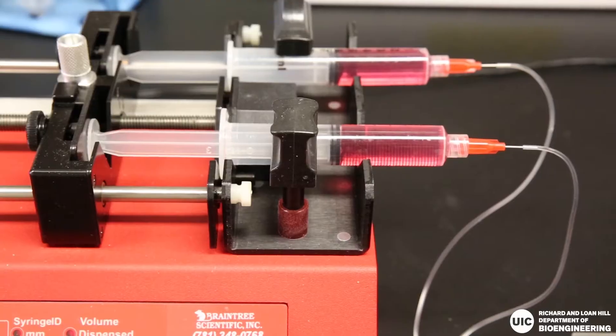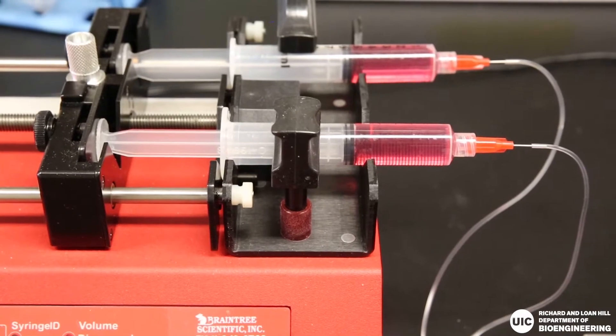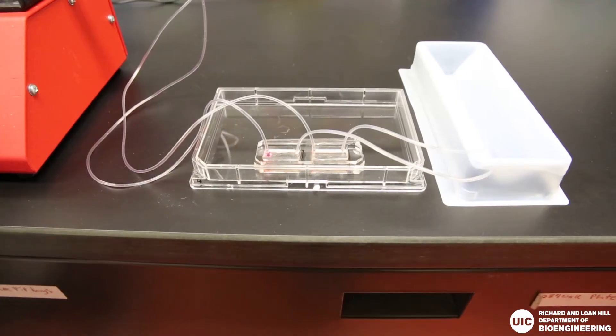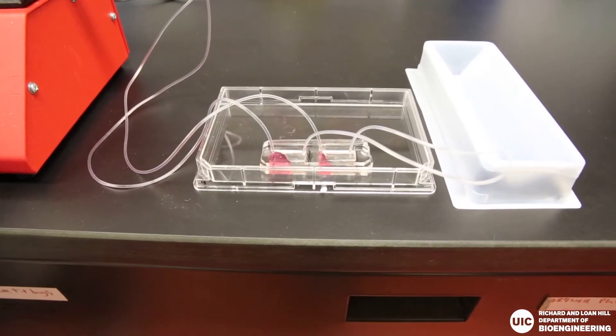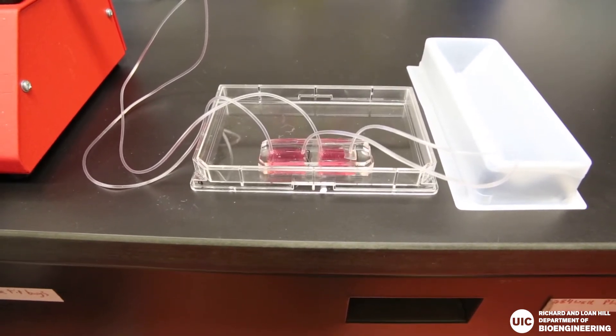We put liver cells on the plastic bottom, seal it off with the rubber polymer, and then flow some blood-like liquid over the cells to mimic what happens in the body. Then we can put some drugs in the liquid to see if the cells might die due to the drug.